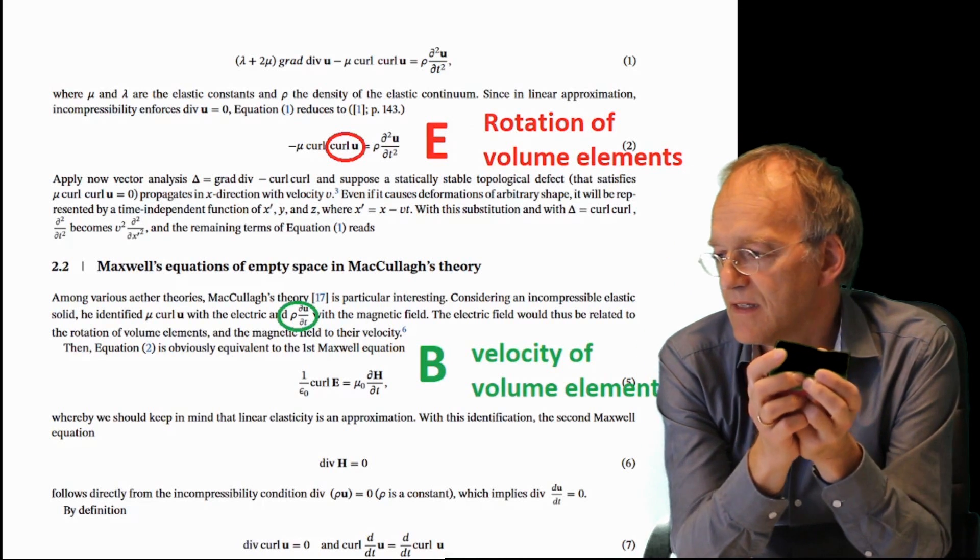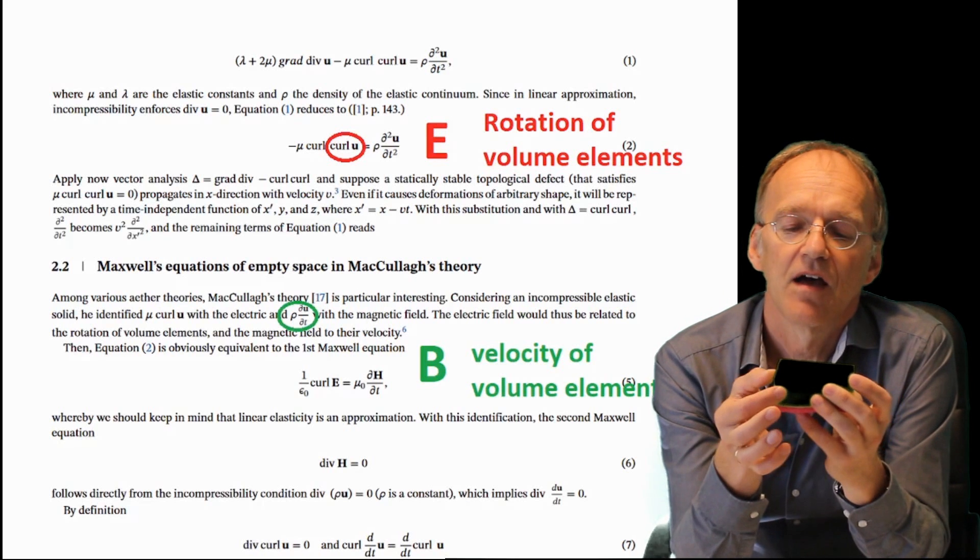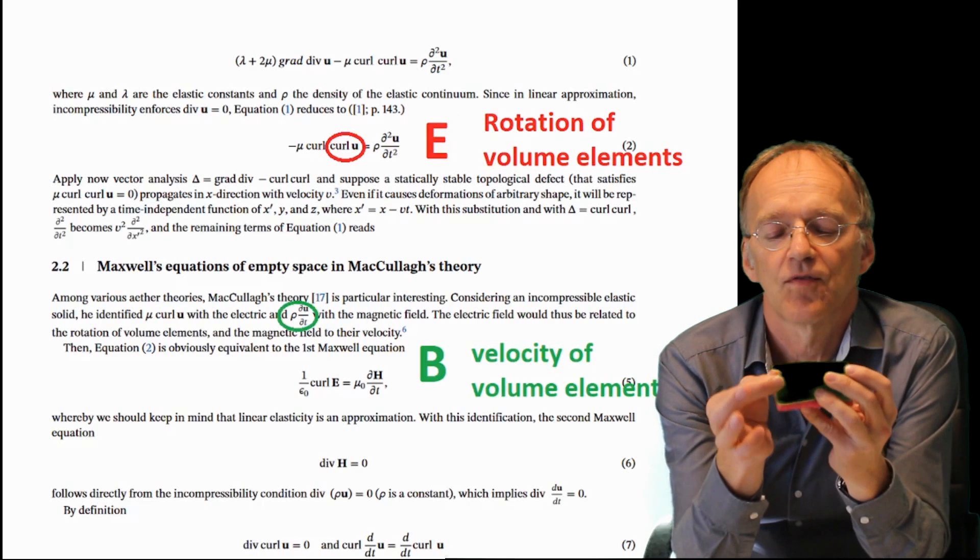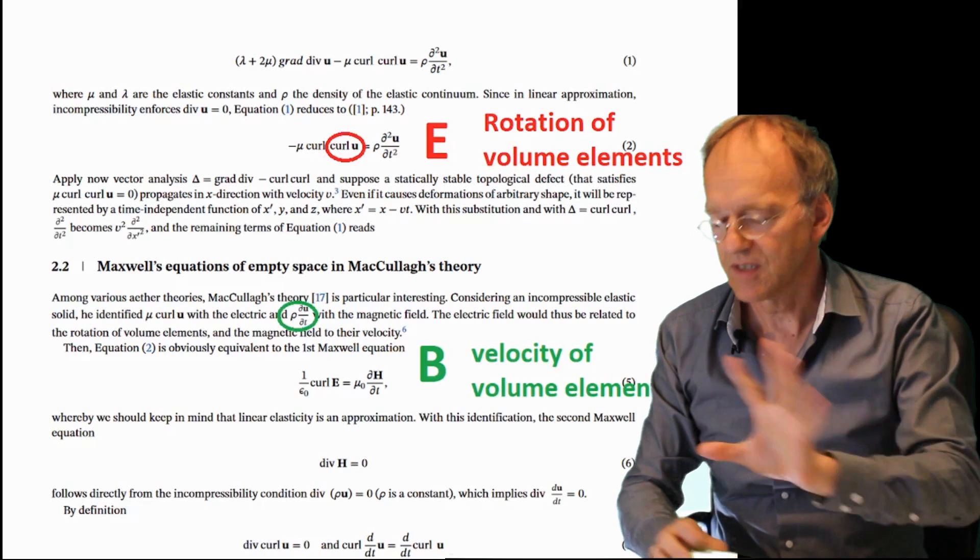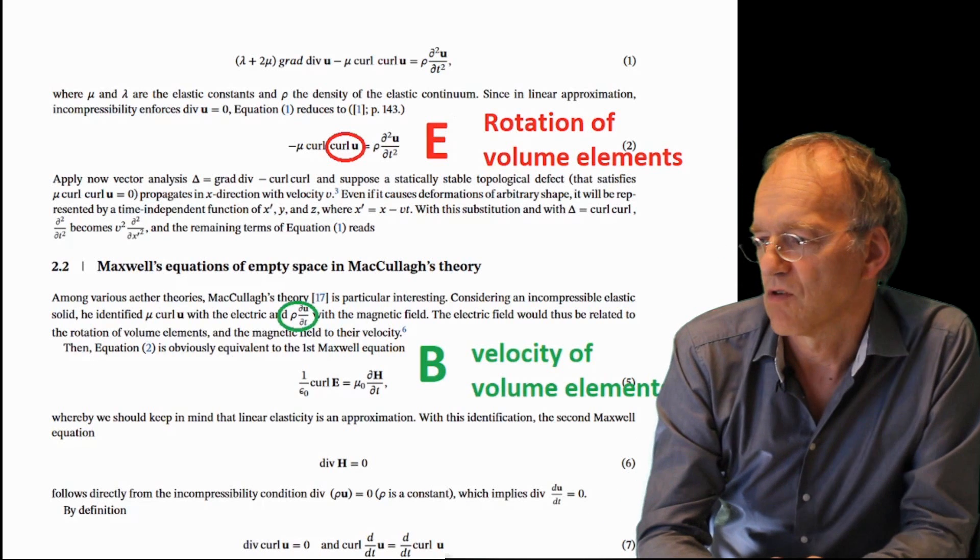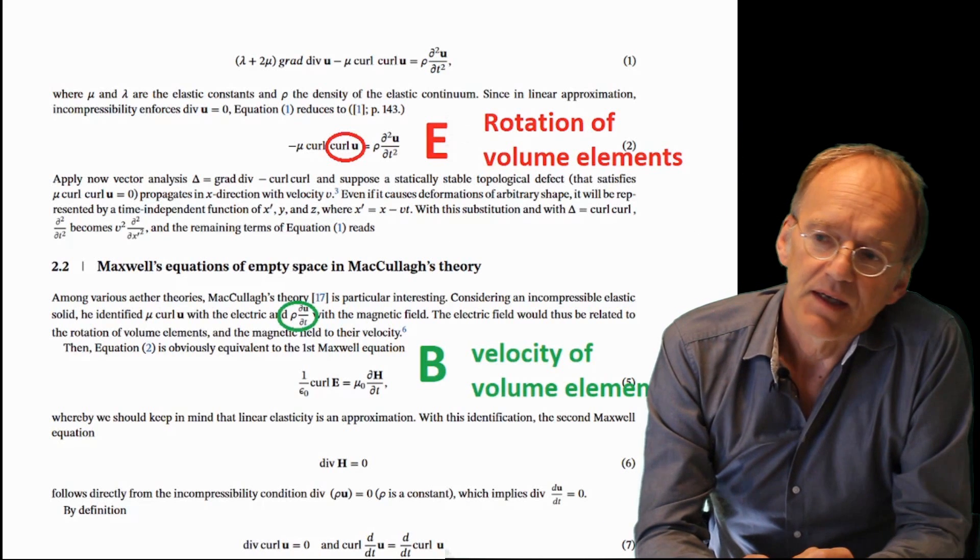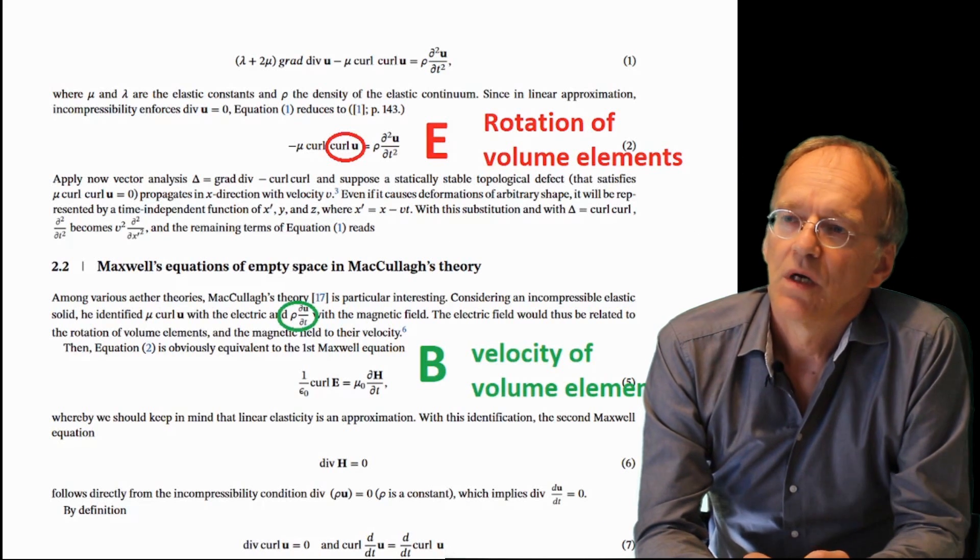The proposal of McCulloch is essentially that you can describe the electric field as a rotation of volume elements and the magnetic field as a velocity of this material. It sounds a little bit strange, but just follow along.